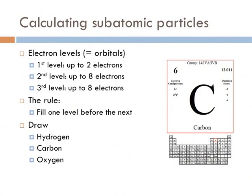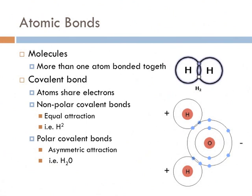That second level fills all the way up to 8 electrons. After that, the third level fills up to 8 electrons as well. That's about as many elements we're going to go through in biology. The rule is: fill one level before you fill the next. Take your chance now to draw a Bohr's atomic model of hydrogen, carbon, and oxygen, and search the internet to see if you got it right.